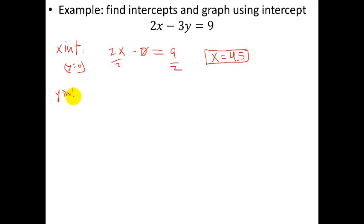To get the y intercept, pretty easy, set x equal to 0. So I can now have 0 - 3y = 9. Well, that's nothing, yeah? So divide by negative 3, divide by negative 3, and we get y equals negative... 9 divided by negative 3 is negative 3.